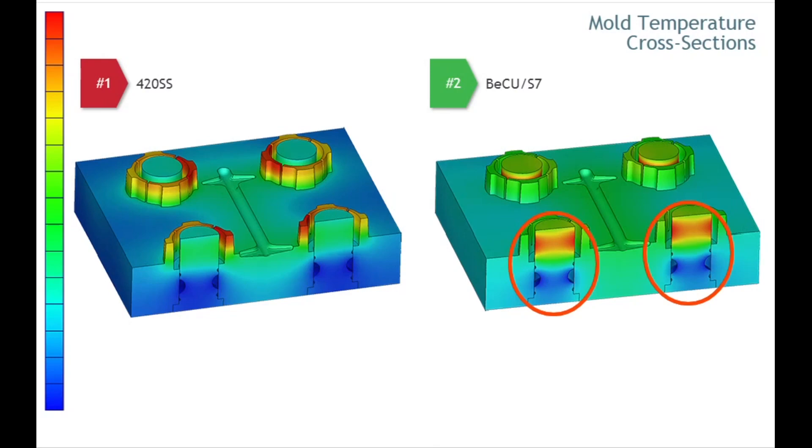This mold temperature evaluation indicates that using a beryllium-copper mold steel will result in a more manageable mold temperature distribution, but the cost for this high thermally conductive steel is also much higher, so may not be a practical solution. Let's look at some other options.